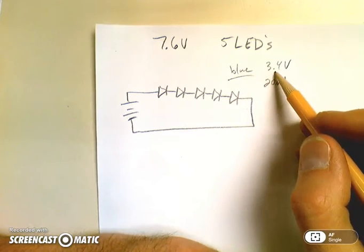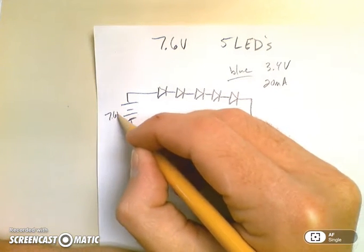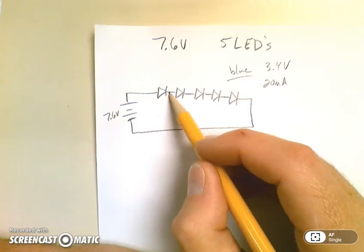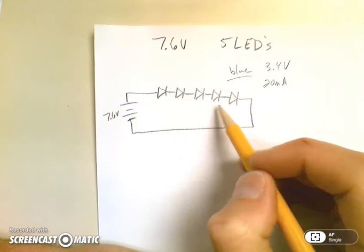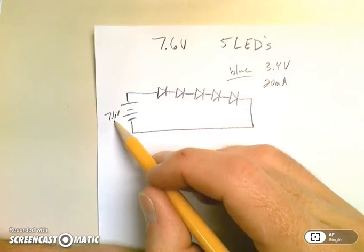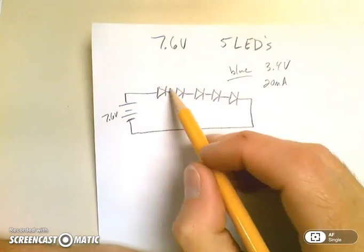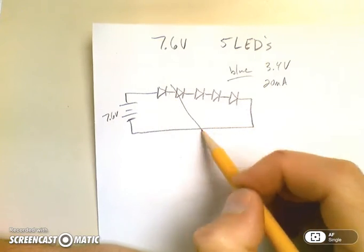This might be one of your designs before you pick an LED, but this should not be a design based on this LED because it requires 3.4 volts and if you only have 7.6 volts there's not enough voltage to light all of these up. The 7.6 is going to be divided by five for each of these, so this will not work.